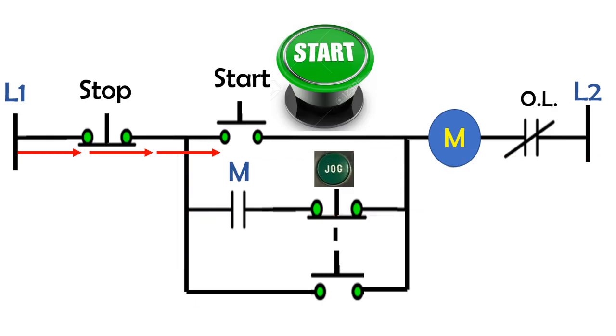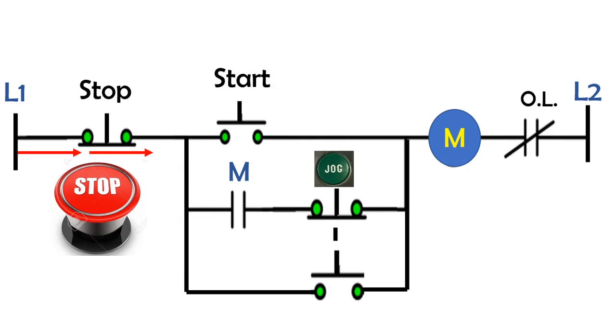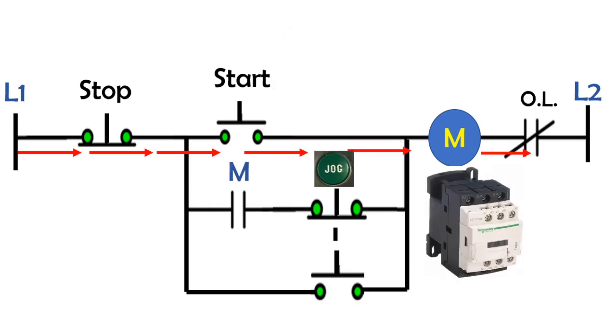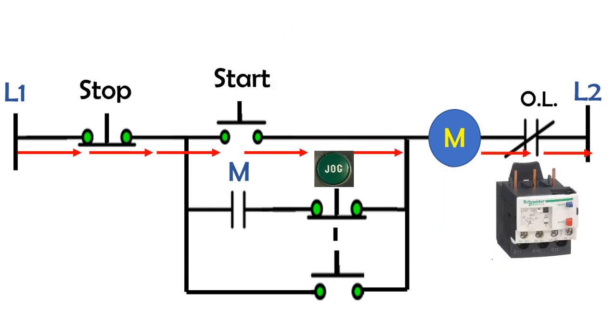When you press the start button, current flows from line one through the stop pushbutton that is connected in series with the circuit, through the start pushbutton that is connected in parallel, through the magnetic contactor and overload relay.